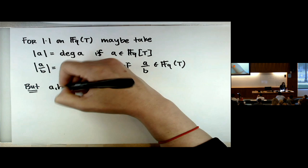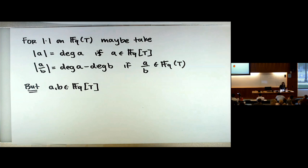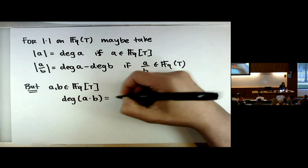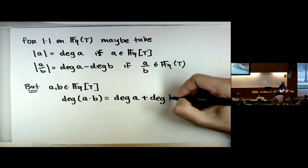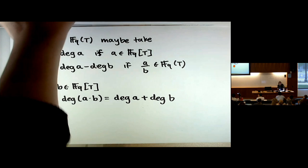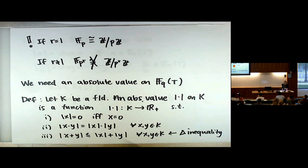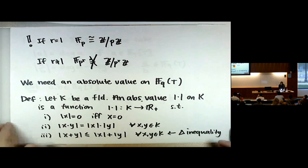But that won't work — not for a silly reason, it just doesn't satisfy the definition. The problem: for polynomials A and B, deg(A·B) = deg(A) + deg(B). But property (2) requires |A·B| = |A|·|B|, meaning I want multiplication on the right side, not addition. Thankfully, when you have addition and want multiplication, you just exponentiate.